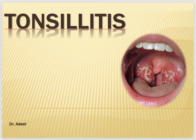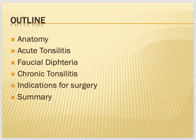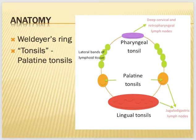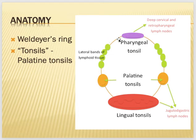Good morning everyone, welcome to one more lecture of otolaryngology ENT. Today we are going to discuss tonsillitis. Before discussing tonsillitis, like in the last lecture I was talking about the anatomy and physiology of the tonsils. When we talk about tonsillitis, remember we are discussing palatine tonsils. In Waldeyer's ring there are lingual tonsils, palatine tonsils, other lymphoid tissue, and adenoids. The palatine tonsils are two in number, each one is oval in shape, and they are a collection of lymphoid tissue.